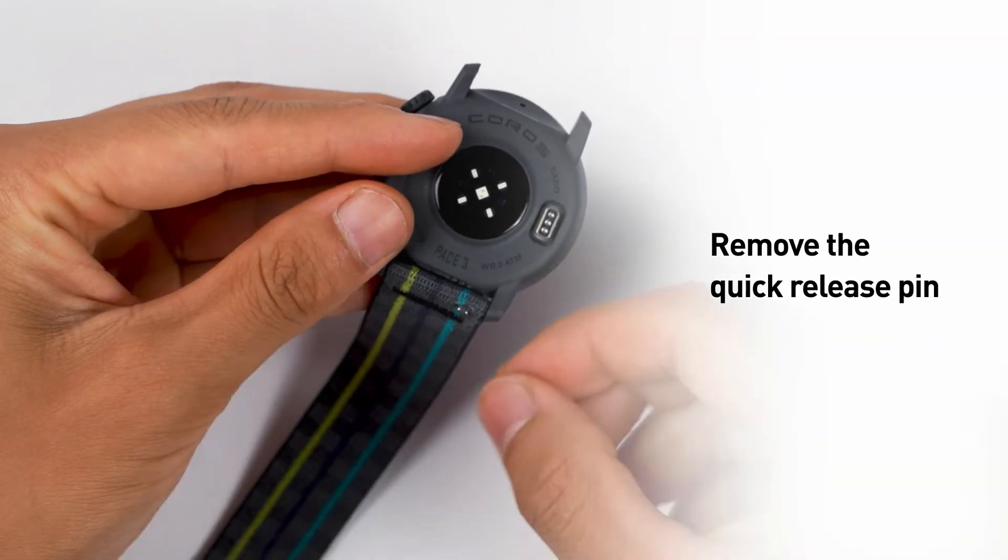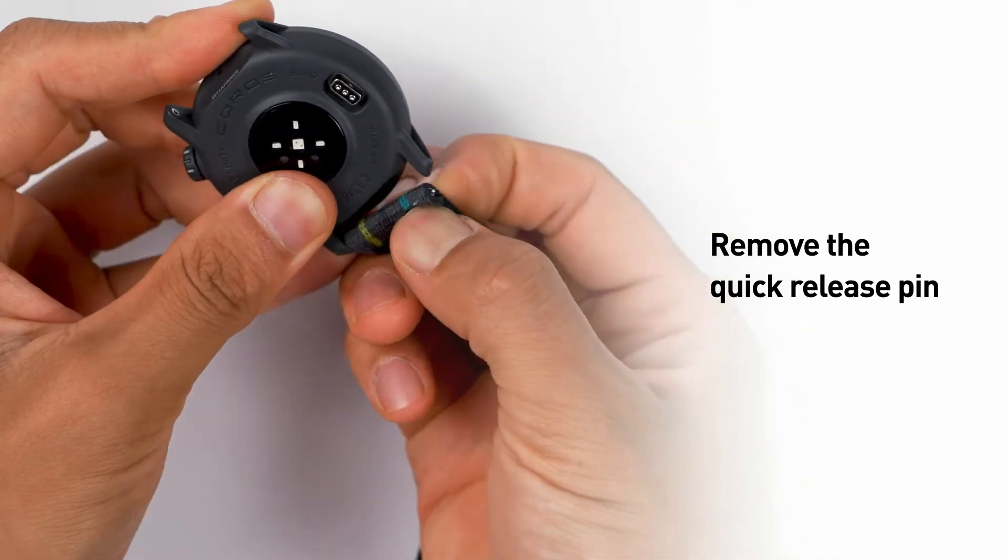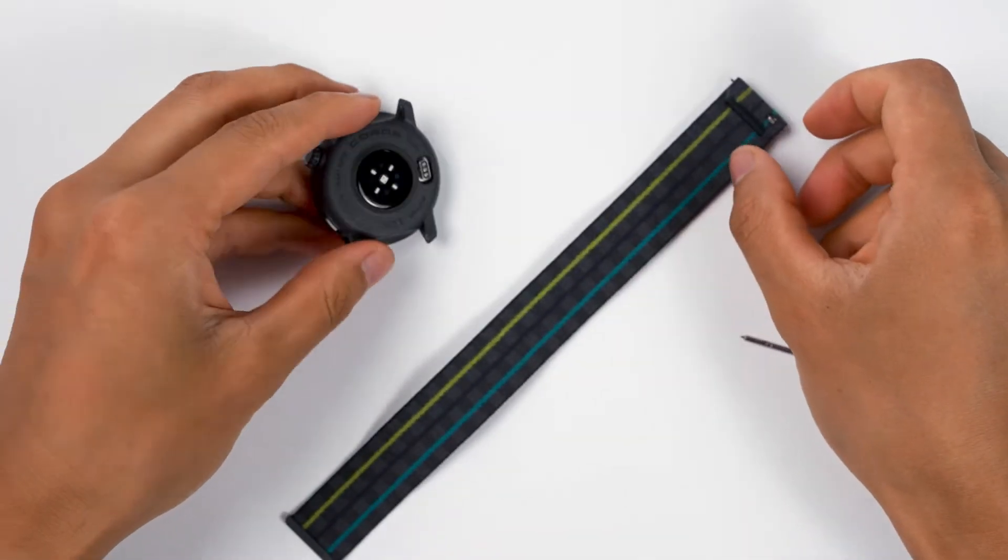To remove the quick-release pin, slide the pin with your fingernail and push the pin slightly to one side until you can remove the band.